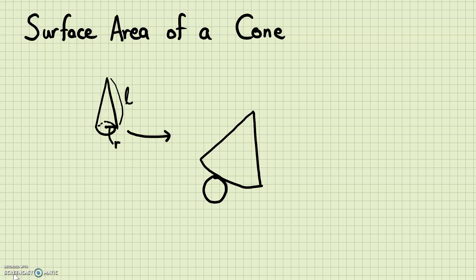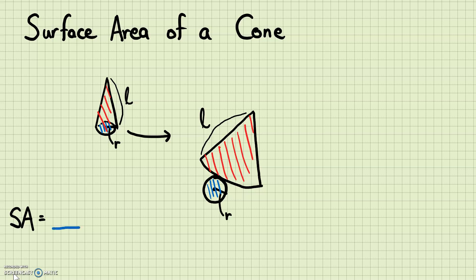Just to help you visualize which part is which: the blue base is this part right here, and the thing that's wrapped around that blue base circle is this part right here. If you wrap this shape around the circle base, you'll get a cone. The measurement here would be R, and L would be this length. So to get the surface area of the cone, the surface area will have to equal the blue circle plus the red pizza piece.